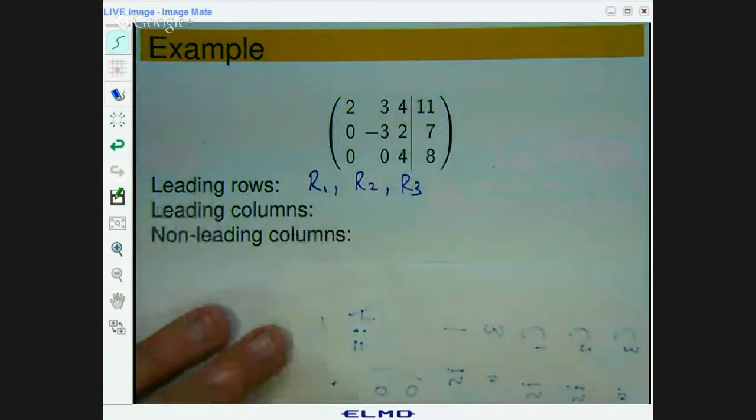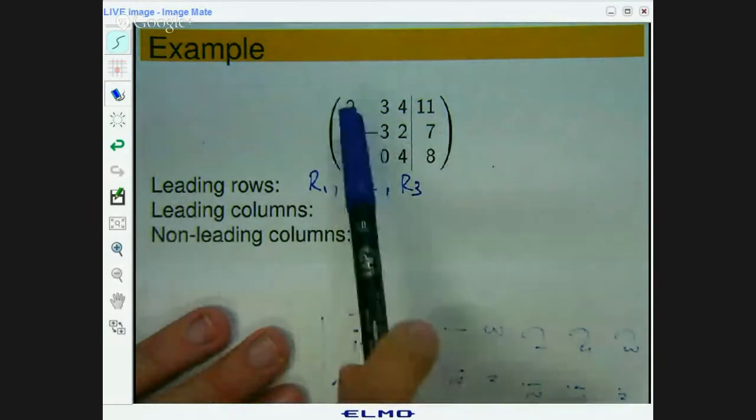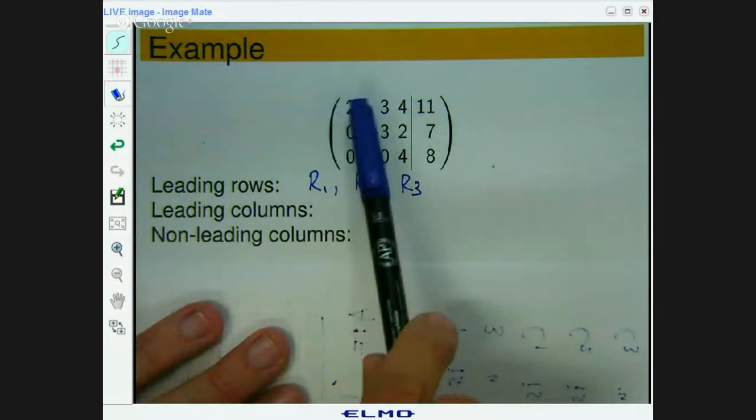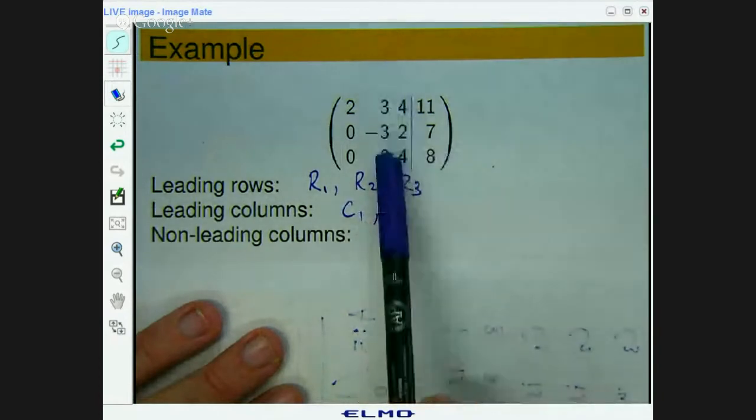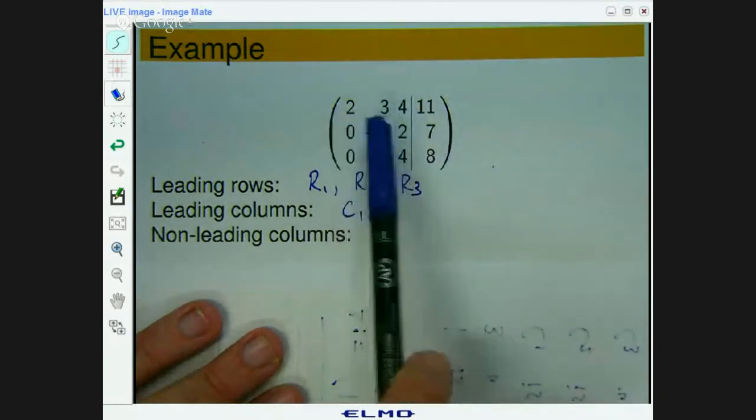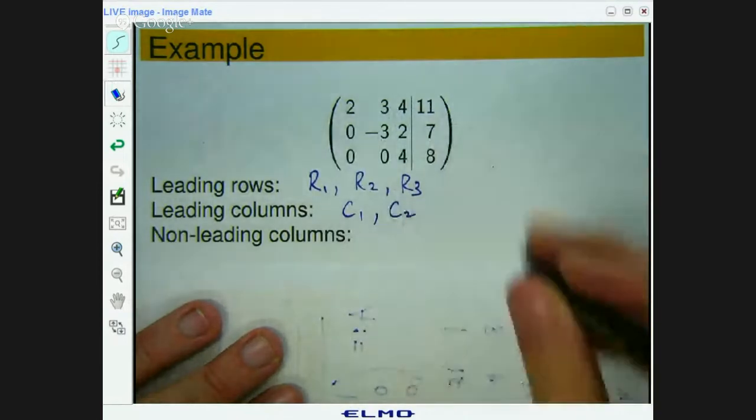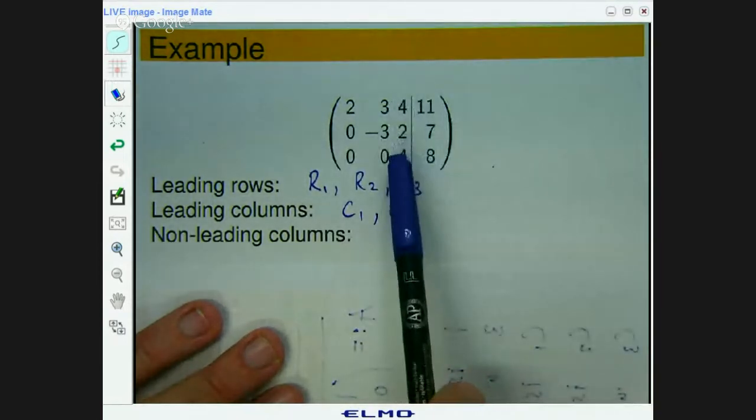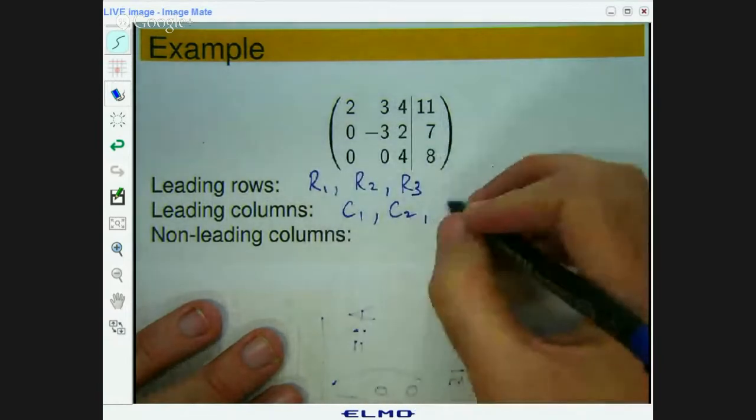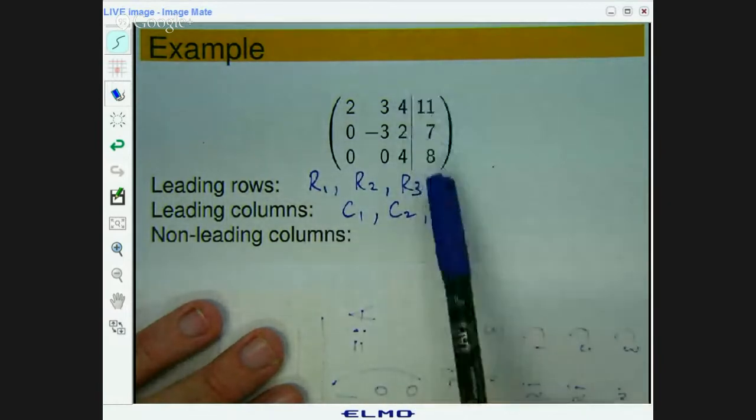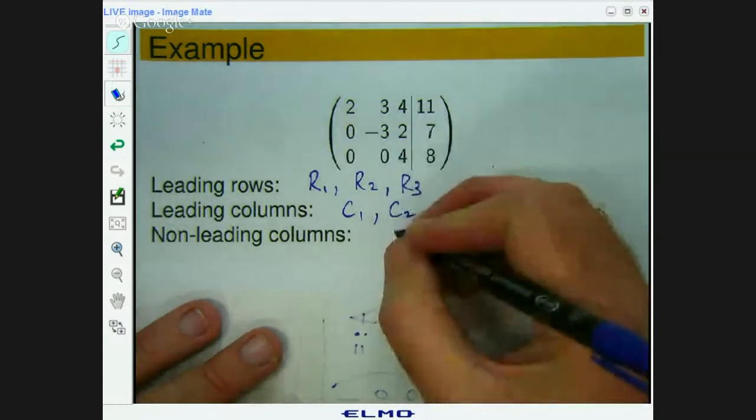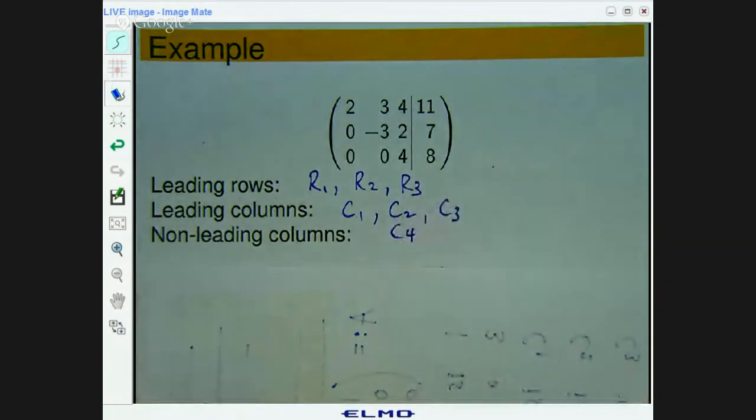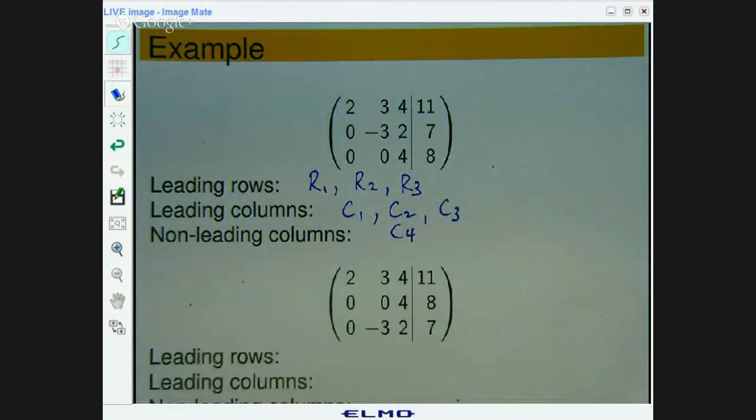Leading columns. Alright, let's just go through. Is column 1 a leading column? Yes, because it contains that leading entry for row 1. So column 1 is leading. What about column 2? Yes, it contains this, which is the leading entry of row 2. Column 3? Yes, it contains this entry, this leading entry of row 3. Is column 4 leading? Well, no. Because it doesn't contain the first non-zero left-hand value of any of the rows. Right? So C4 is non-leading. Ok. Let's move on to another one. This will be the last one.